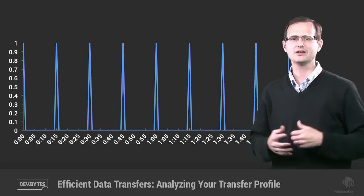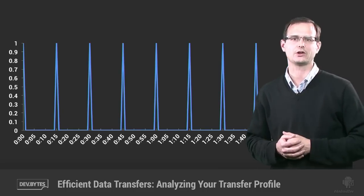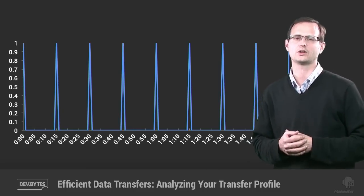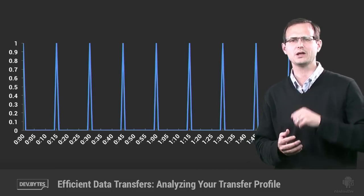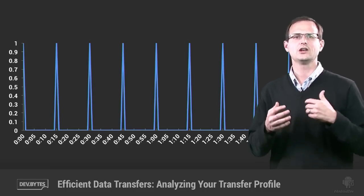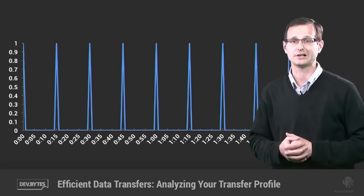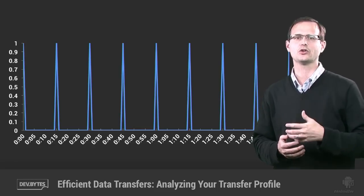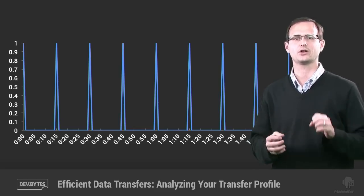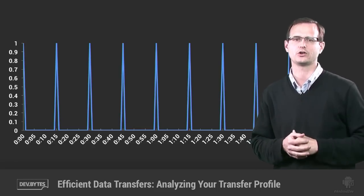We can incrementally reduce the battery impact by lowering the frequency of these regular transfers. But a better approach is to try and eliminate periodic updates completely, allowing your app to have a baseline of no battery drain.